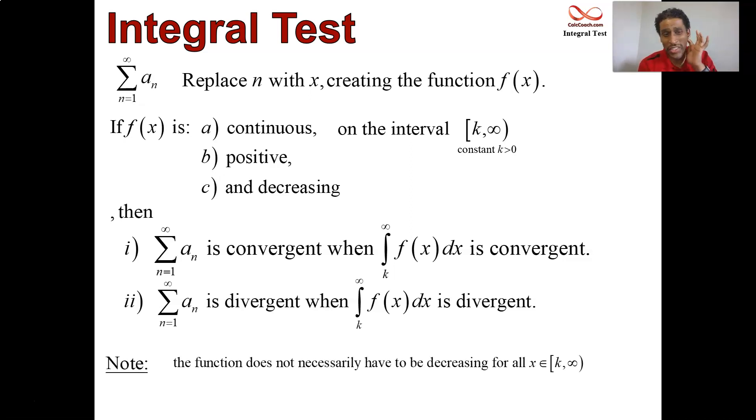It might not be decreasing n equals one or n equals two or n equals three, but eventually you need to show that it is decreasing or you need to see that it is decreasing. As long as it's decreasing eventually, that's what matters for all n after n equals four or something like that. So, let's execute this test on our first example, the easiest example of all.